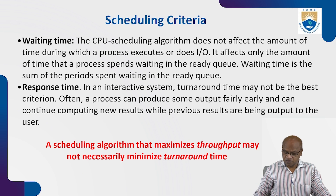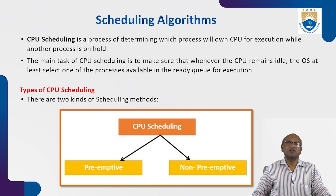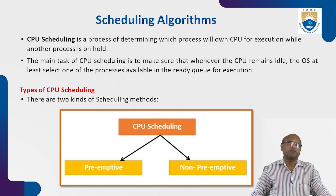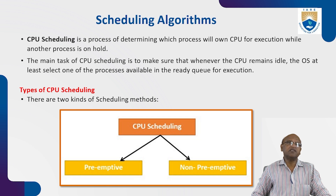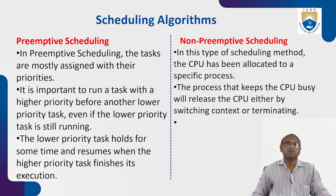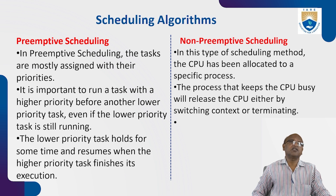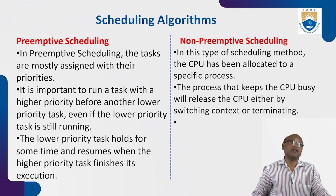A scheduling algorithm that maximizes throughput may not necessarily minimize turnaround time. There are two types of CPU scheduling algorithms: preemptive and non-preemptive. CPU scheduling is the process of determining which process will hold the CPU for execution. The main task of CPU scheduling is to ensure that whenever the CPU is idle, the OS selects at least one of the processes available in the ready queue for execution — the CPU should always be busy.